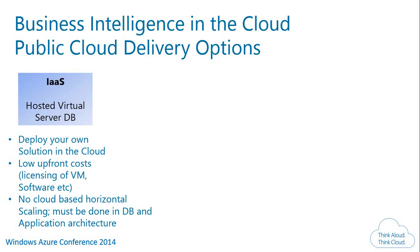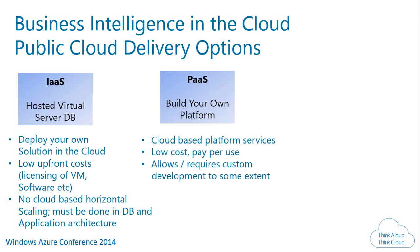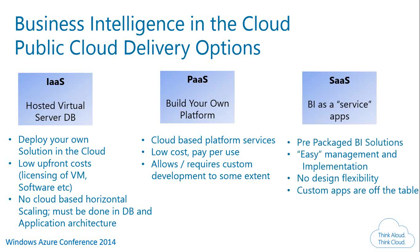With PaaS, you pay for what you use. It allows some customization but not as much as IaaS — in IaaS you can run Unix virtual machines, Python, Java, Perl; in PaaS you run Microsoft technologies. With SaaS, everything is prepackaged: you sign up, pay for what you use, and the flexibility is less because features must be available as built-in.